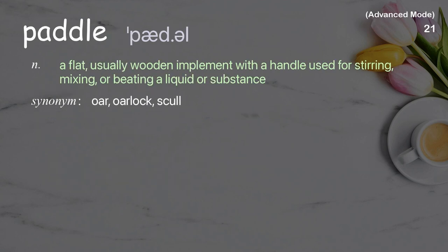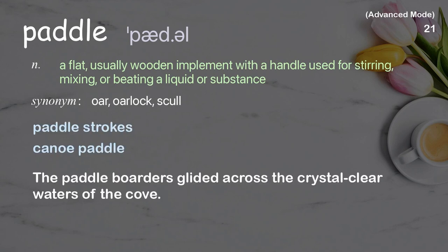Paddle: a flat, usually wooden implement with a handle used for stirring, mixing, or beating a liquid or substance. Examples: paddle strokes, canoe paddle. The paddler glided across the crystal-clear waters of the cove.